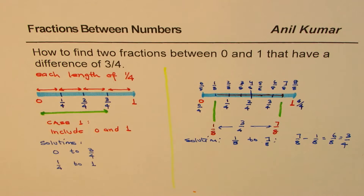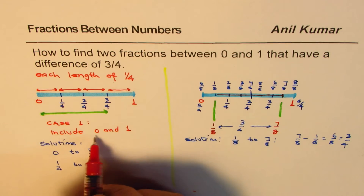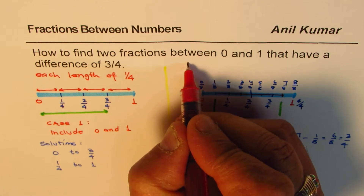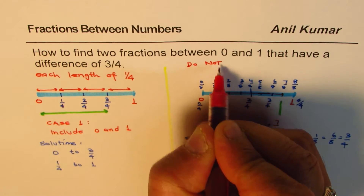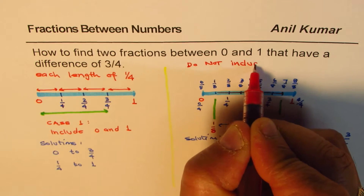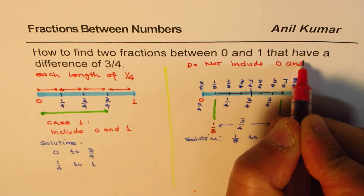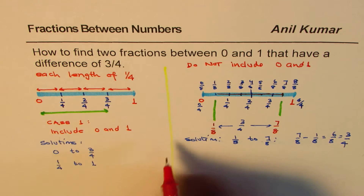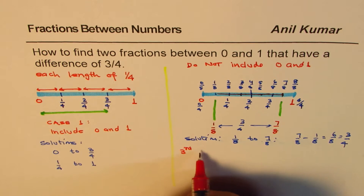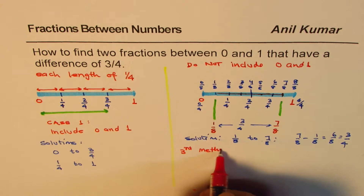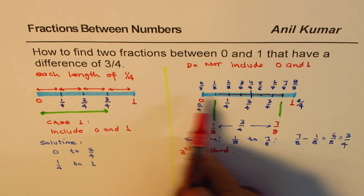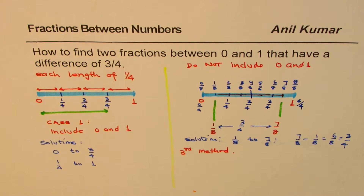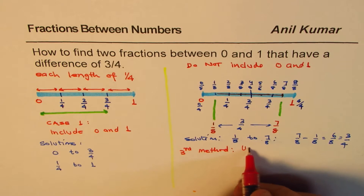You can simplify 6 over 8 to 3 over 4. So that is another method. In this case, if we do not include 0 and 1, somewhere in between we can find 1 eighth and 7 eighths. Now here is the third method.